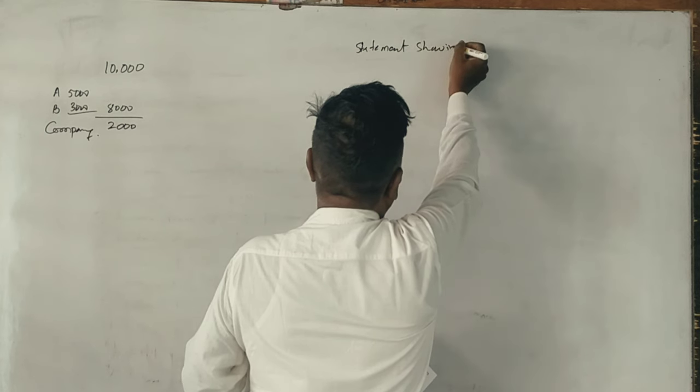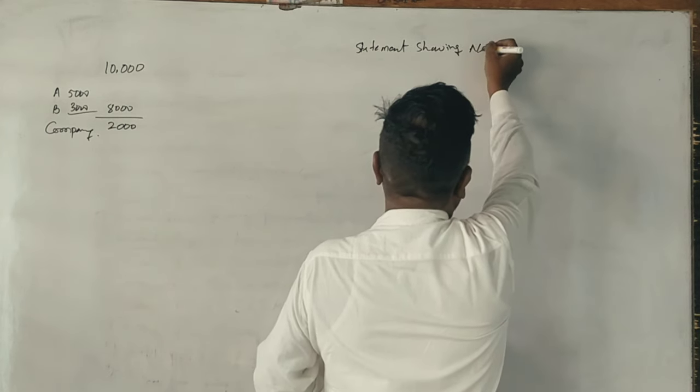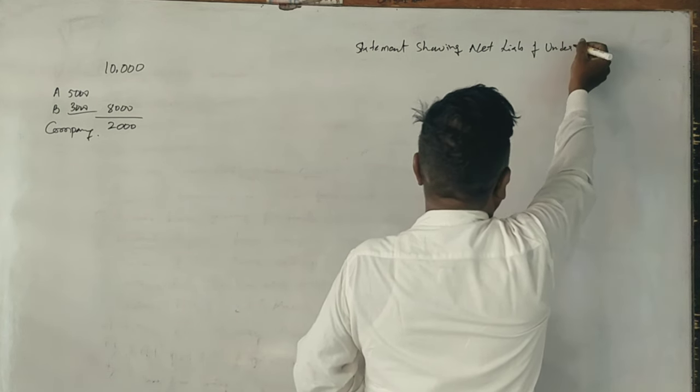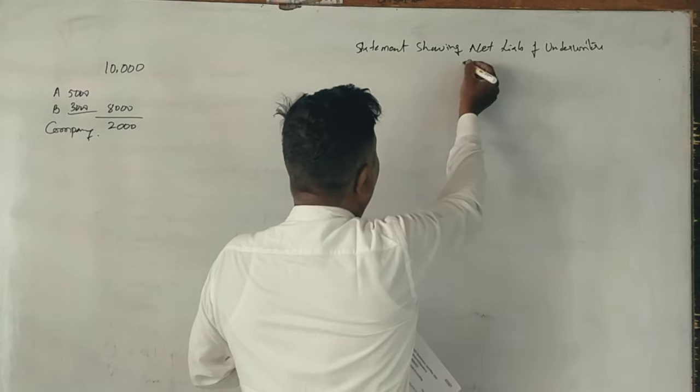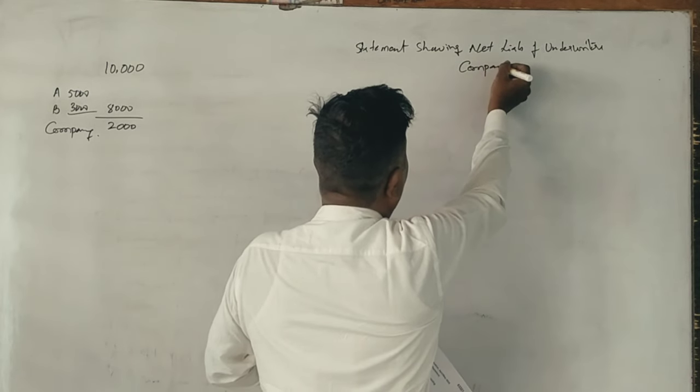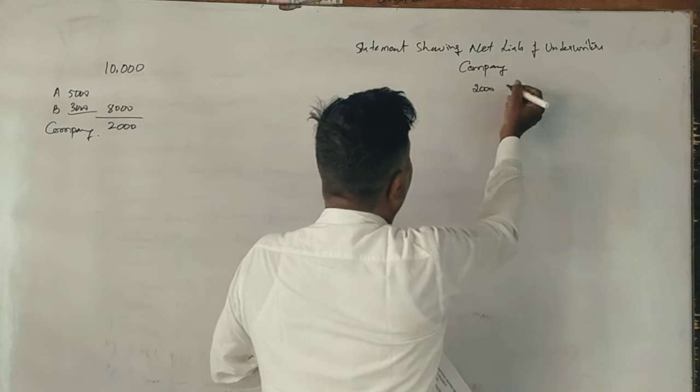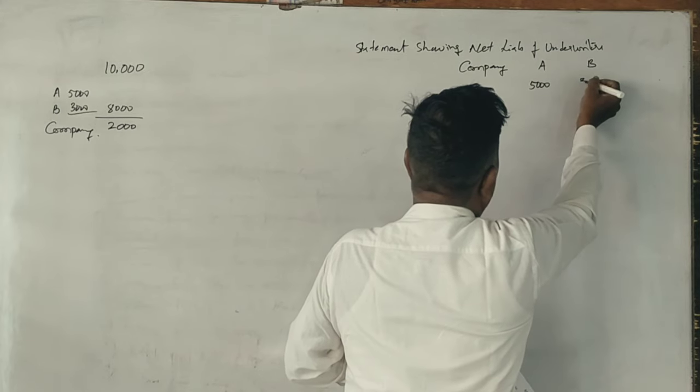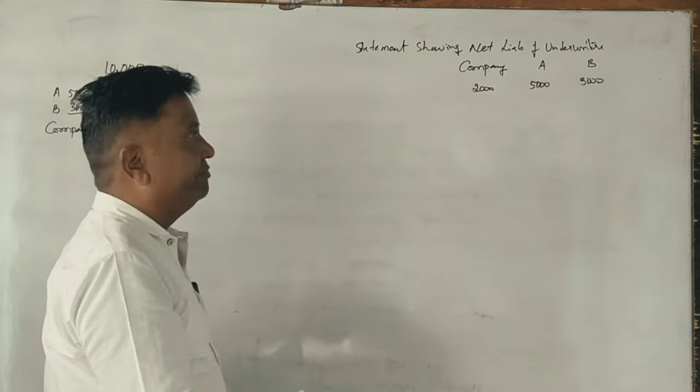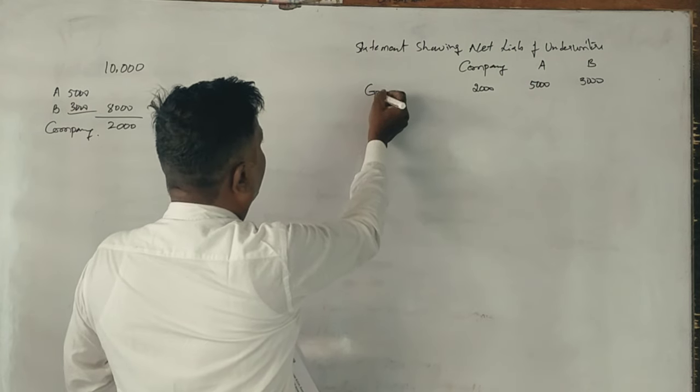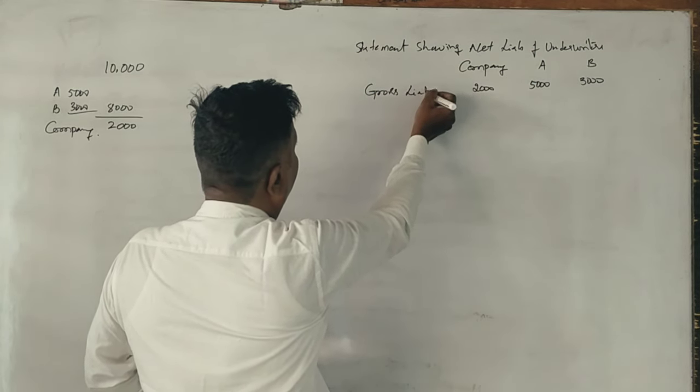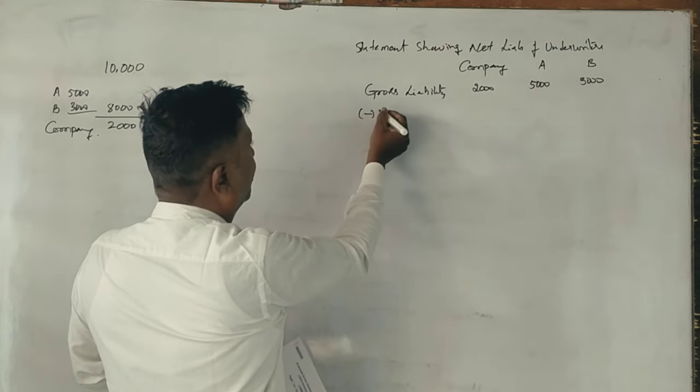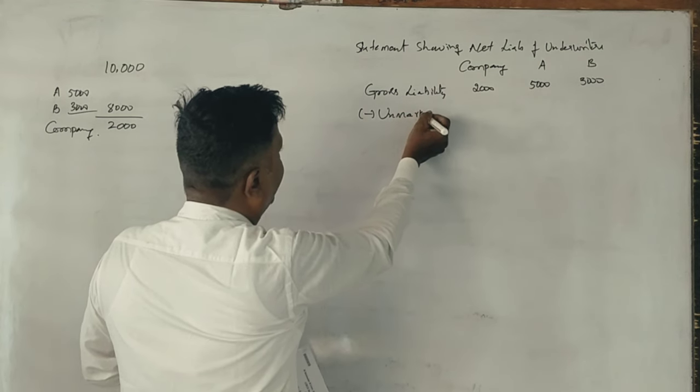First, company is short 2,000 shares. A - 5,000 shares, B - 3,000 shares, total 10,000. This is gross liability. Now, as per the rules, first calculate unmarked applications minus marked.